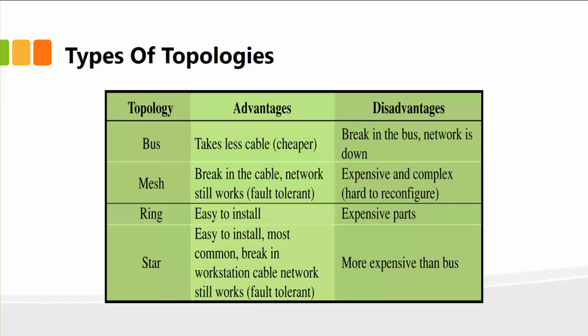Let's start with the first one, which is the bus. It takes less cable and is relatively cost effective, but the disadvantage is that if the bus or the entire cable breaks, all of the computers connected to that cable would not work. The second topology is the mesh. If there's a break in the cable, your network would still work because it provides fault tolerance.